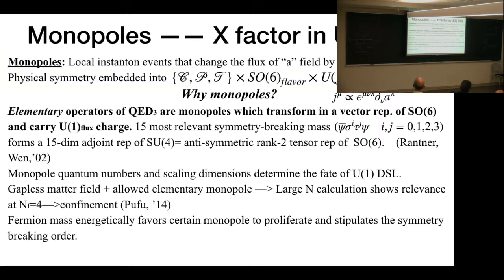And the fermion bilinear, actually, they form an adjoint representation of the SO(6), which is equivalent to a rank-2 anti-symmetric tensor. So it's an anti-symmetric combination of monopoles.